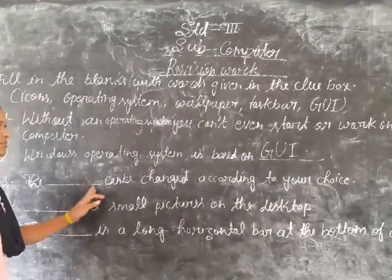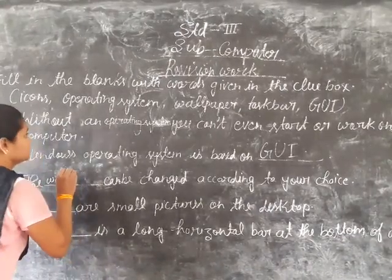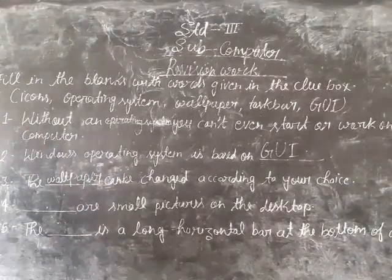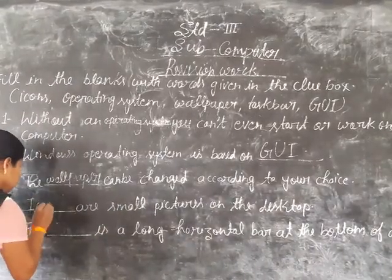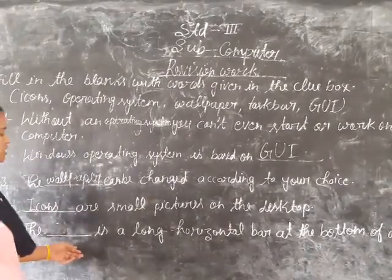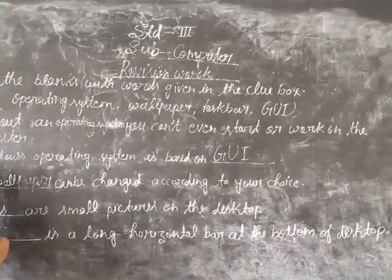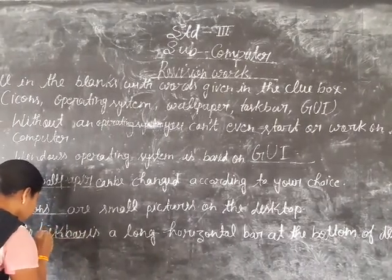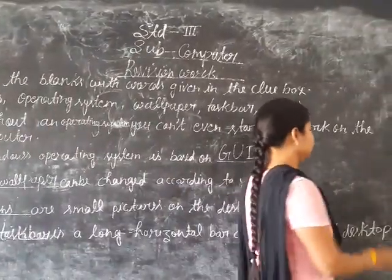And third, the wallpaper can be changed according to your choice. And fourth, icons are small pictures on the desktop. The taskbar is a long horizontal bar at the bottom of the desktop.